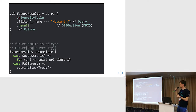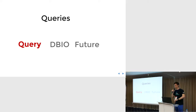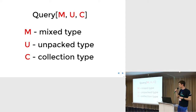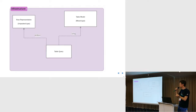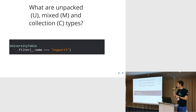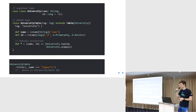Here is an example of what we can do with the future results — we can do the usual things on a Scala Future. Going from the bottom to the top: the Query is a type parameterized by a mixed type, an unpacked type, and a collection type. The table model is our mixed type, the row representation is our unpacked type. The third parameter is the collection type — for example a Sequence when we are filtering something.